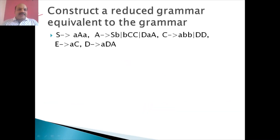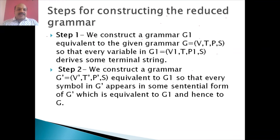We have been provided with one question where we have to construct a reduced grammar equivalent to the given grammar. These are the productions. There are two steps for construction of reduced grammar. Step one talks about constructing a grammar G1 equivalent to the given grammar G = (V, T, P, S), so that every variable in G1 — that is V1, T —